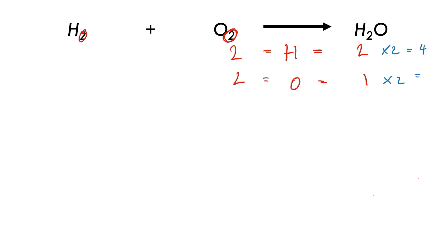We balance this by multiplying the number of hydrogens by two, so we would end up with 2H2 plus O2, and that would give us 2H2O. That's how we would balance this equation.